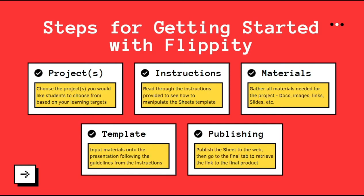Here are some steps we've come up with to help your experience with Flippity be successful. First, choose the project from Flippity that best fits the information or activity you want students to do. Second, read all of the instructions on how to manipulate the Google Sheets template. Third, make sure you have all of your materials together — if you're going to incorporate Google Docs, images, links, or slides, have all of that ready before you get started. Then go ahead and start manipulating the template. Finally, publish the Google Sheets to the web, which will give you a permanent link where you can come back to this review game or project over and over.